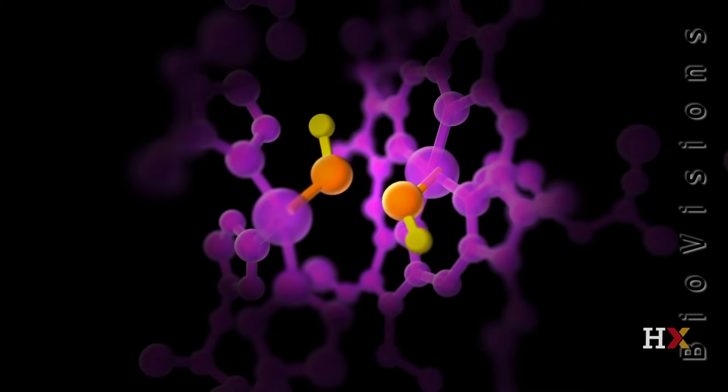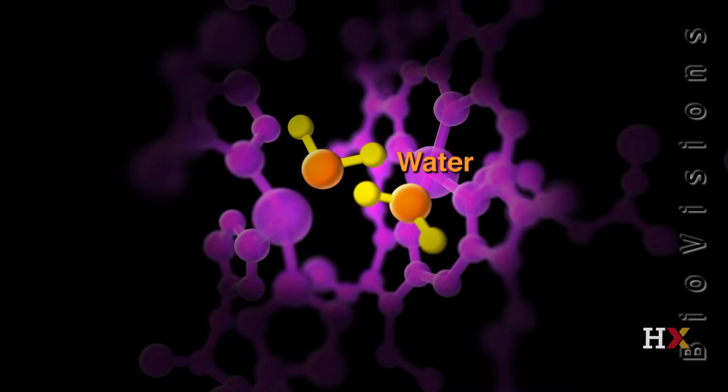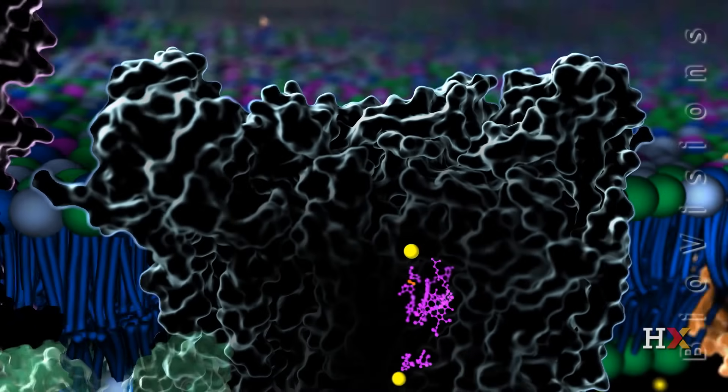In the absence of oxygen, the electron transfer comes to a halt, meaning that ATP synthesis also stops. Indeed, the reason we breathe oxygen is so that it can serve as the final electron acceptor at the end of the electron transport chain.